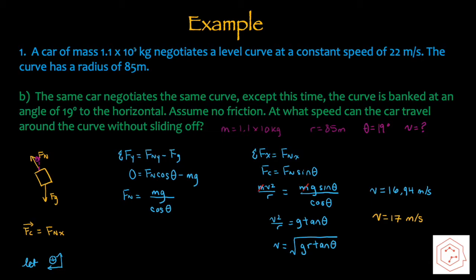In this case, the centripetal force is the x-component of the normal force, letting upwards and inwards be positive. First solving for net force in the y-component — there's no acceleration in y, so it equals zero — which gives the y-component of normal force as N cos θ, minus mg equals zero, so Fn equals mg over cos θ. Solving for net force in the x-component, that's the x-component of the normal force, Fn sin θ, which equals centripetal force. So mv squared over r equals mg sin θ over cos θ. Mass cancels on both sides, and isolating for speed, we get 16.94 m/s, which rounds to 17 m/s.